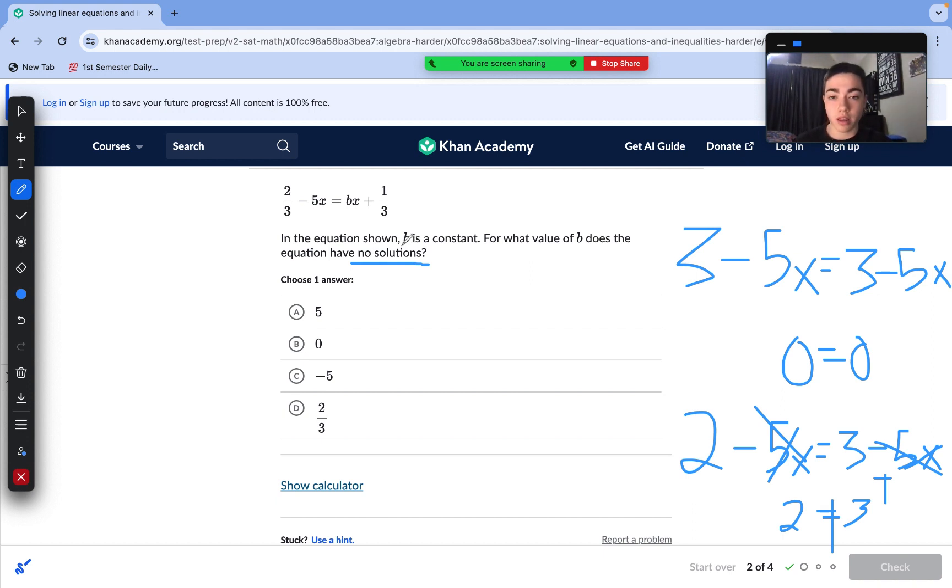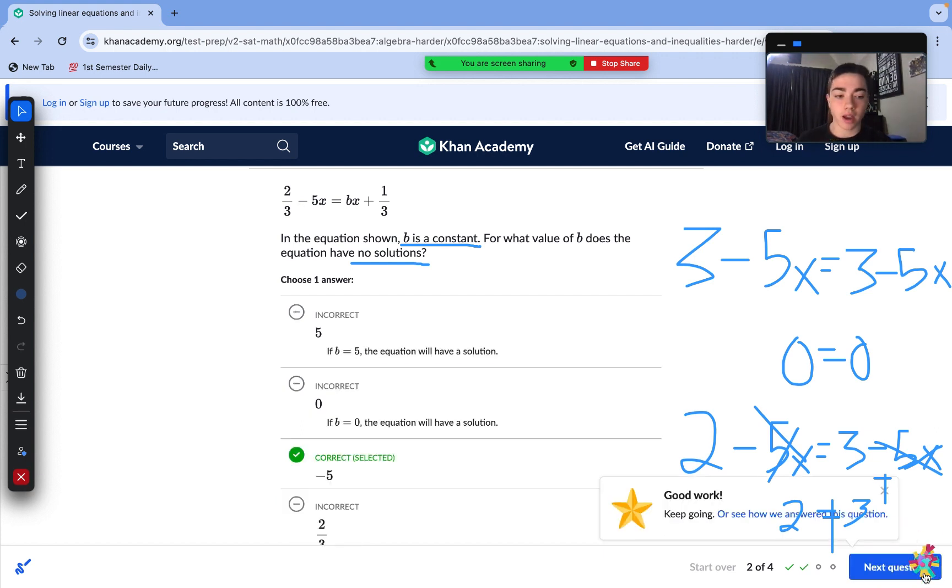It's actually a really simple question. B, we know, just needs to be the same value as the other B on the other side. So B just needs to be equal to negative 5. Then we are left to have 2 thirds minus 5x equals negative 5x plus 1 third. We have the same variable term. So if we were to move over that negative 5x, it would cancel out on each side. We will get no solutions. So C is our answer here.